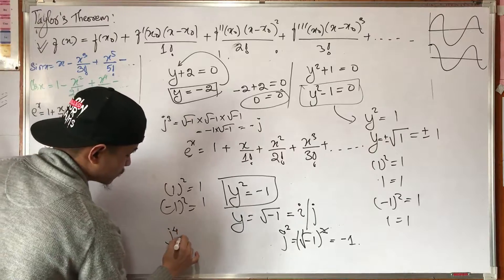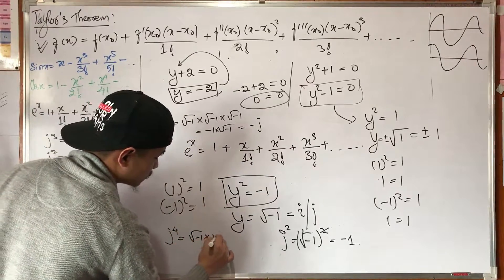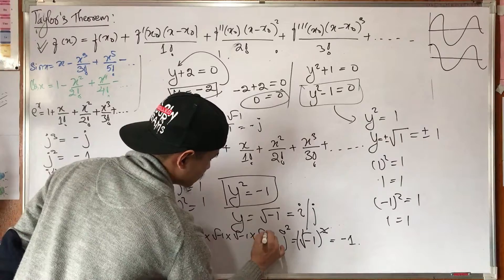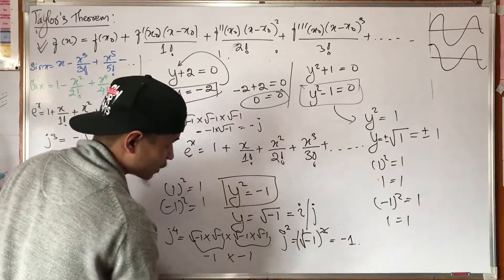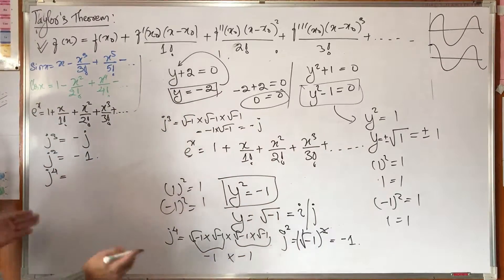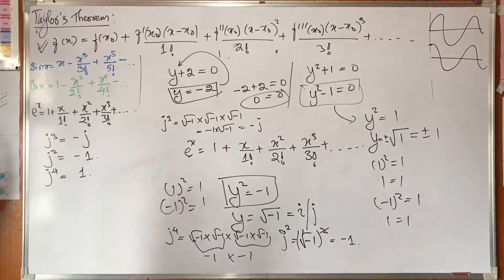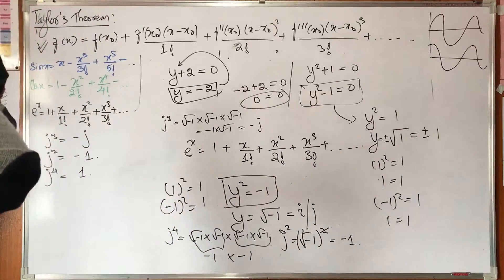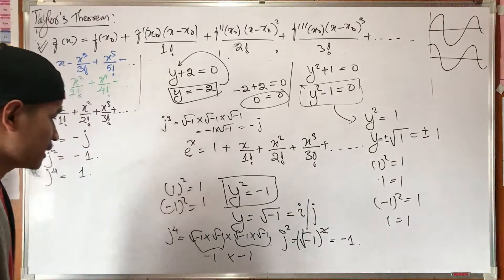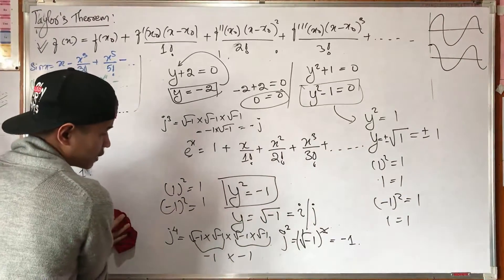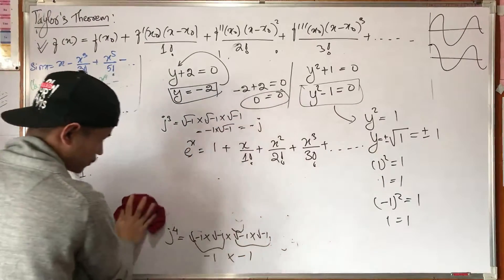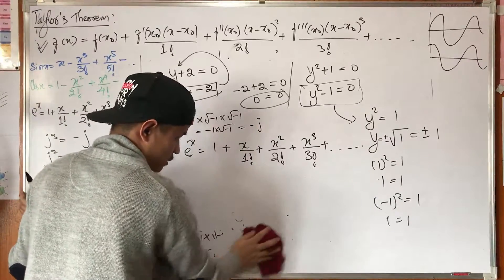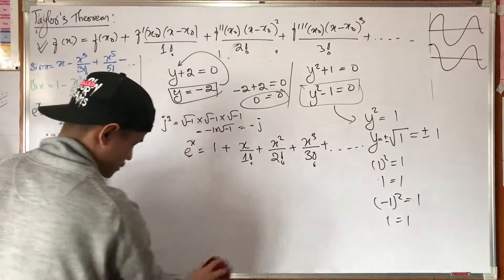j to the power of 4: root over minus-1 into root over minus-1 into root over minus-1 into root over minus-1. That means 1. So root over minus-1 into root over minus-1 equals minus 1, and minus 1 into minus 1 equals 1. This is the local result.